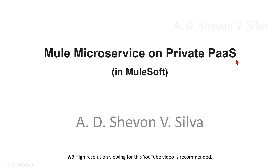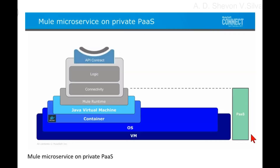Here you can see a Mule microservice on private PAAS. The logic and connectivity are defined within an API contract. The API contract sits on top of Mule runtime and interacts with it.